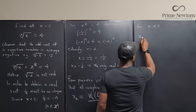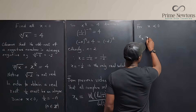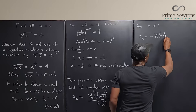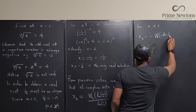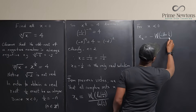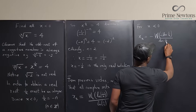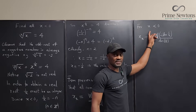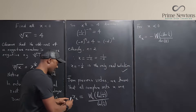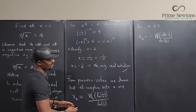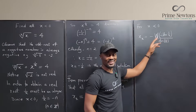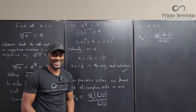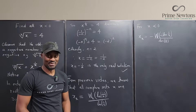For x less than zero, x_k equals negative W of negative ln(1/4), divided by the natural log of 1/4. This is for x less than zero; the version for x greater than zero has no minus signs. The only difference is the two minus signs here versus none there. Never stop learning — if you stop learning, you stop living. Bye!